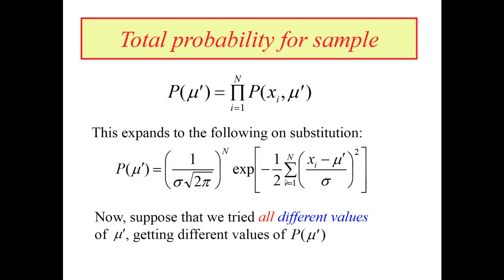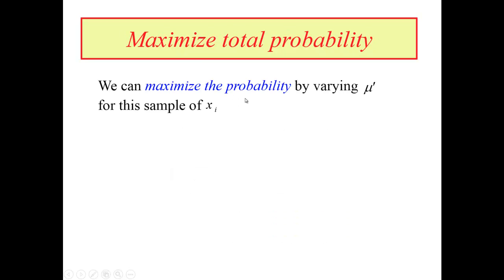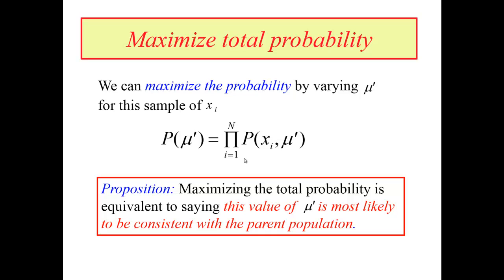Here is how the method of maximum likelihood works. Suppose we tried all different possible values of mu prime as candidates for the mean of the parent population. For each value of mu prime, we would have a different value for this product of all the probabilities. We maximize the probability as a function of mu prime by varying mu prime until we get the maximum value — taking the derivative and setting it equal to zero — and the value that results is the one most likely consistent with the parent population.